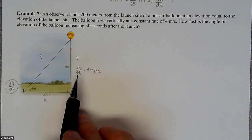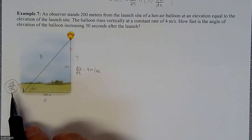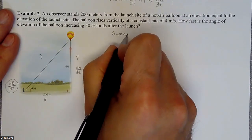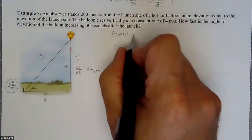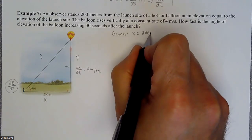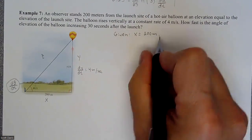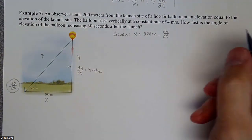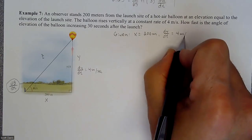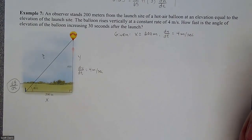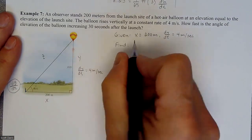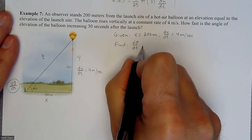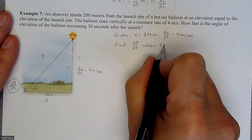We'll take a derivative involving theta to get d theta dt. Let's organize our thoughts: x equals 200 meters (the horizontal distance), dy/dt equals 4 meters per second (positive because it's increasing), and we want to find d theta dt at 30 seconds.